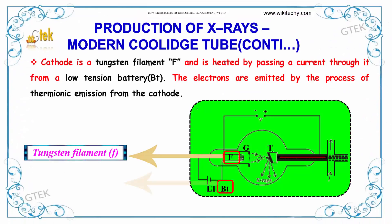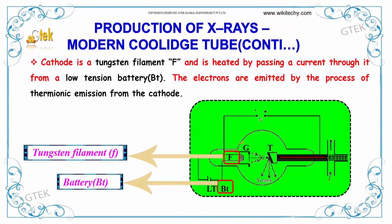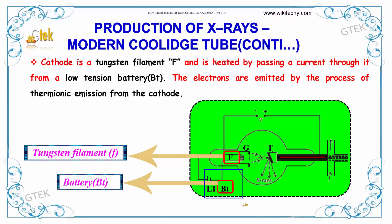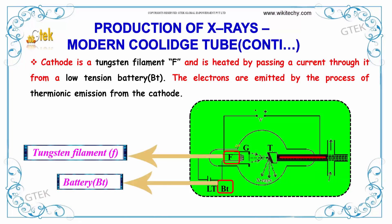In the production of X-rays, the cathode is a tungsten filament F which is heated by passing a current through it from a low tension battery. The electrons are emitted by the process of thermionic emission from the cathode.